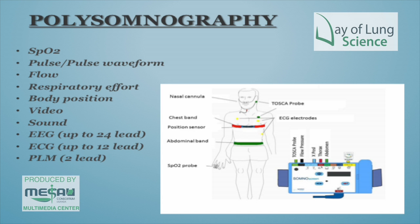Here's a diagram of one of the devices. There are various flow sensors, thorax sensors, and you can even have transcutaneous carbon dioxide sensors and end-tidal capnography. So you can get as much respiratory analysis as possible from polysomnography, as well as neural data.